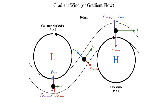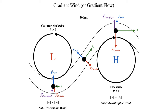This gives us a flow pattern with weak flow at the trough base and stronger flow at the ridge apex. When wind moves slower than the geostrophic wind, we call that sub-geostrophic. When wind moves faster than the geostrophic wind — as in the ridge apex — we call that super-geostrophic.